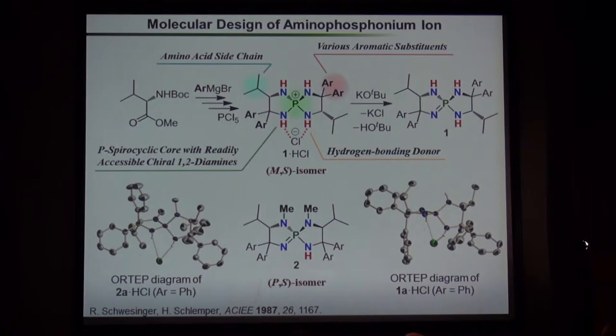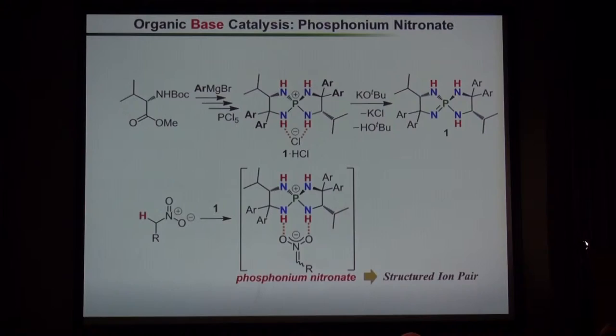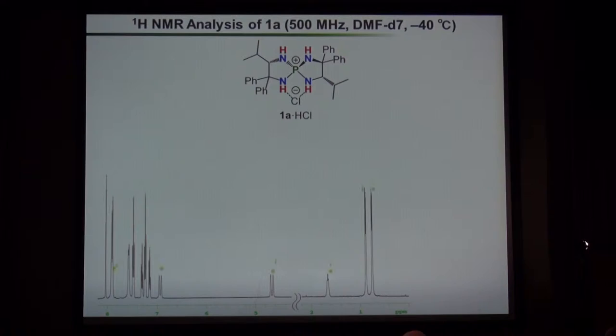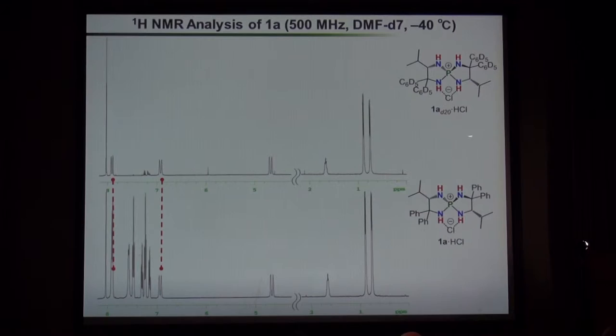To initiate the study, we attempted to confirm the formation of the reactive ion pair having a nucleophilic anion. For that purpose, we selected nitromethane as a precursor, in expectation of forming a phosphoramide nitronate as a structured ion pair. Here is a proton NMR chart of this salt, with each proton signal assigned to the appropriate position. An important point is that the NH protons are located in the aromatic region due to the cationic character of these molecules, and this assignment was clarified using deuterated aminophosphoramide salt.